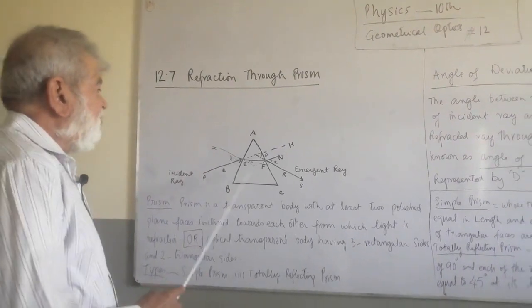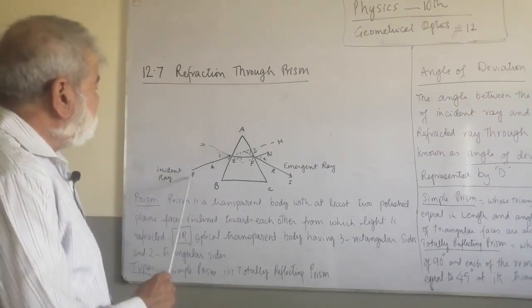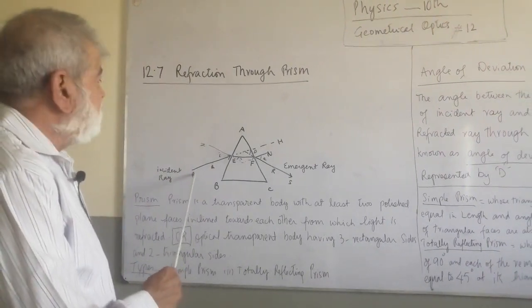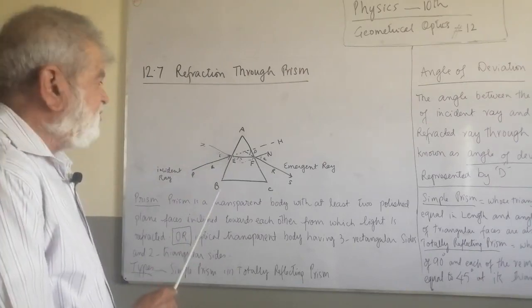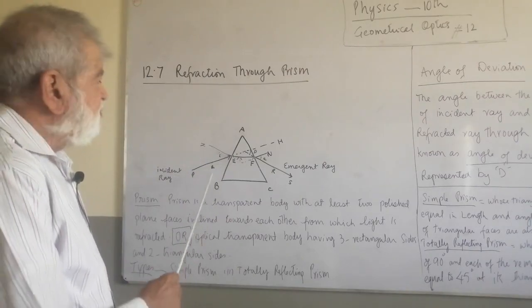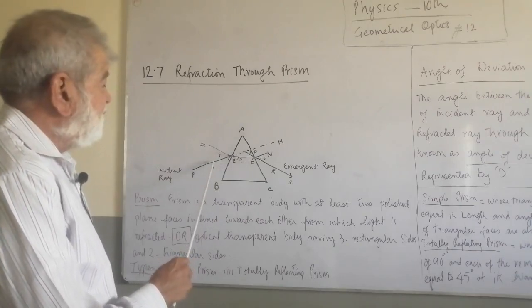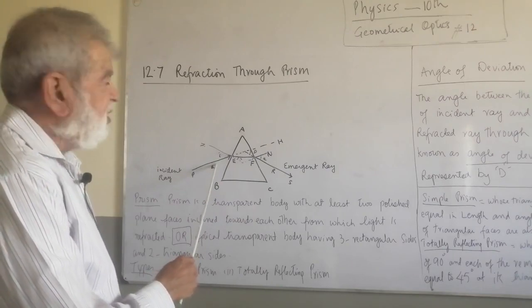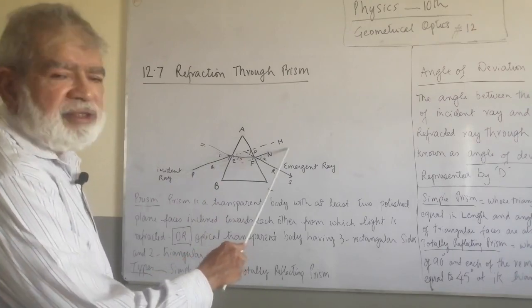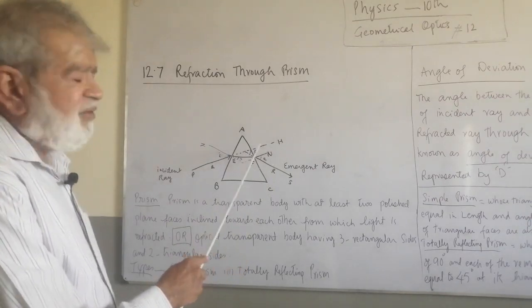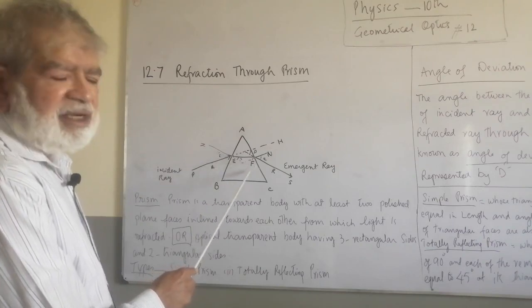ABC is the prism. Ray of light, the incident ray, PE is incident on the side AB of the prism. It is refracted and takes this path. The original path of the ray was this. It should have gone from P to H but because of refraction that occurs, it deviates and goes along the path EF.